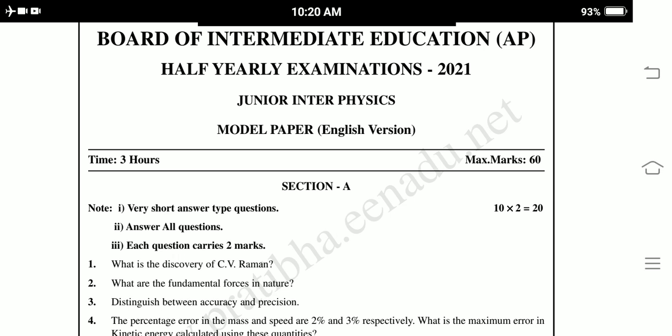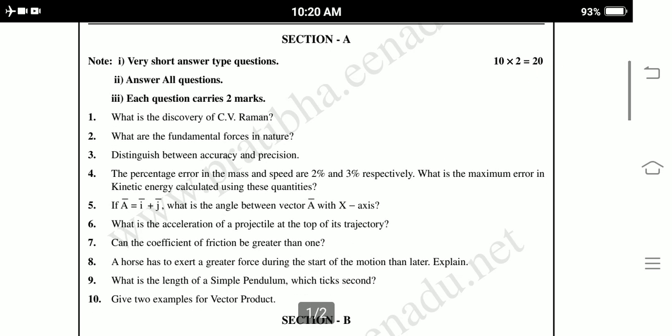Section A has short answer type questions. 10 questions, 10 into 2, each carries 2 marks, 10 into 20 marks. First question: What is the discovery of C.V. Raman? Second question: What are the fundamental forces in nature? Third question: Distinguish between accuracy and precision.